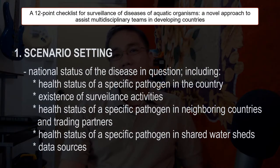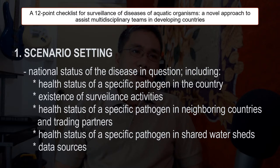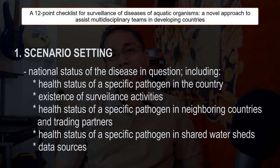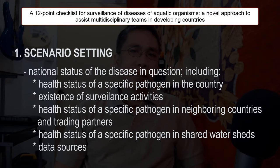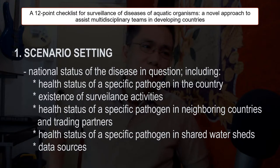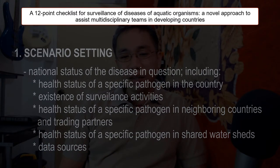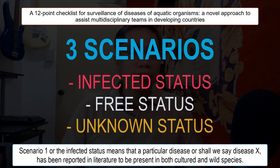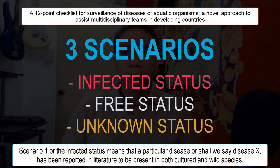Without further ado, let's examine each item in the checklist. First, we have scenario setting. That involves looking into the national status of the disease in question, the health status of shared resources like your watersheds, even neighboring countries and trade partners. We must also ensure data sources because we can create a false scenario if our data is unreliable. We can generalize three scenarios here.